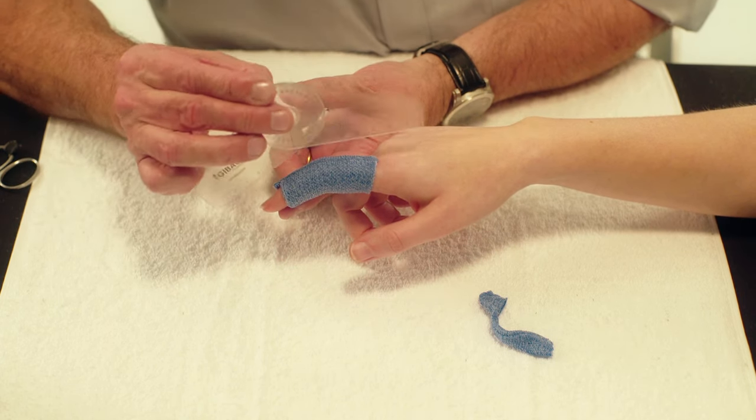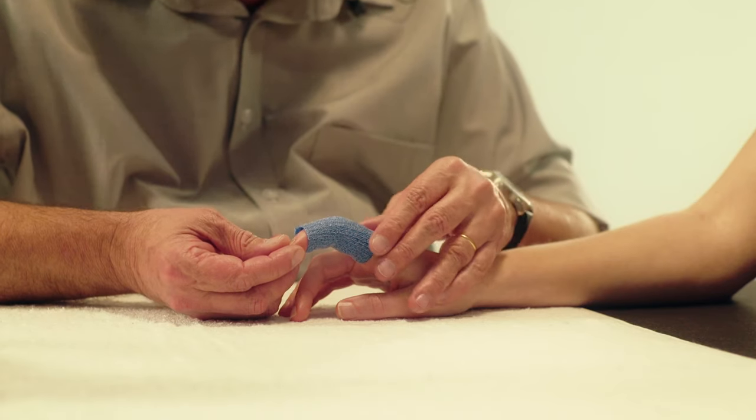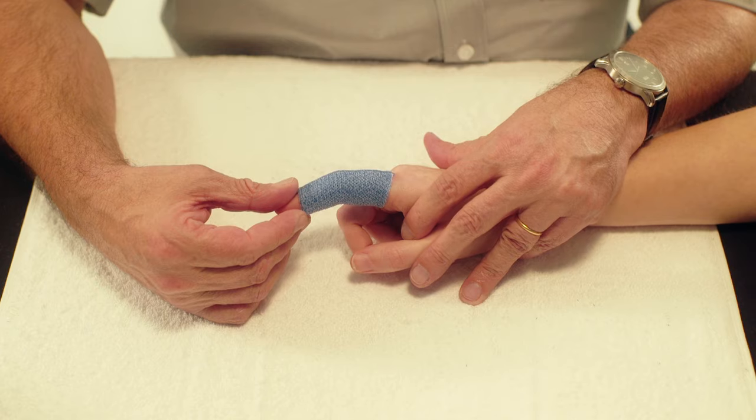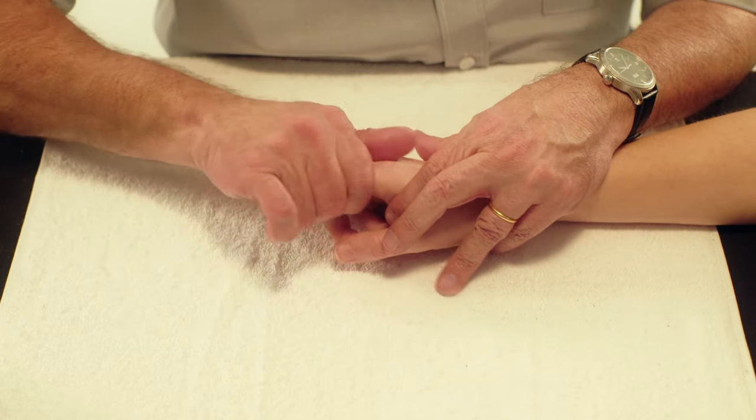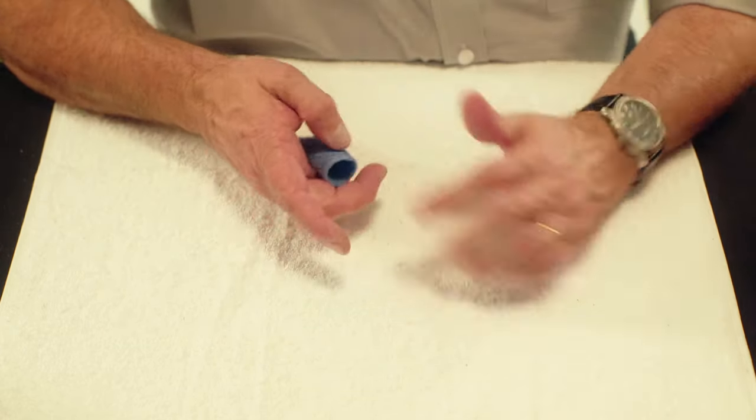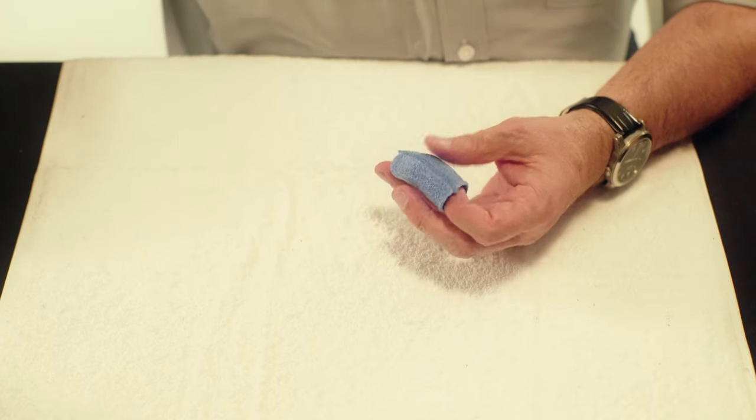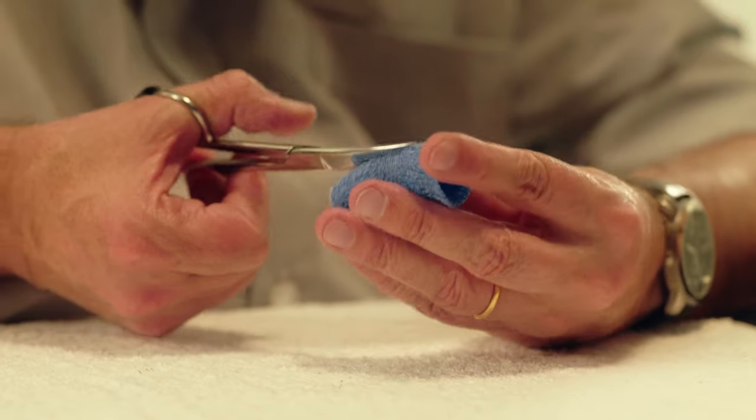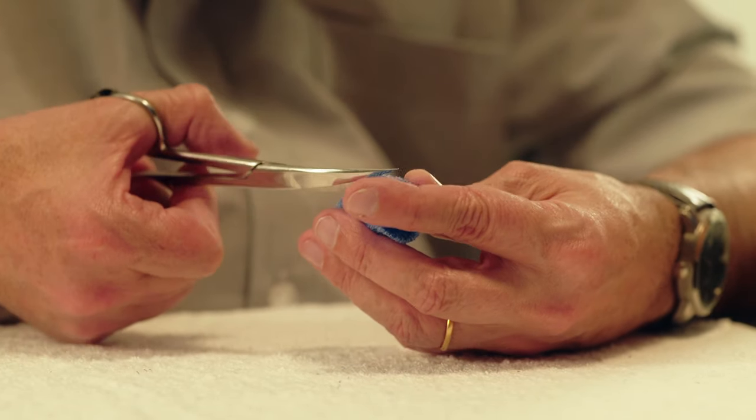Once the orthicast has hardened, remove it from the finger. Trim away the dorsal part of the PIP joint with scissors. Do this generously to allow full flexion.